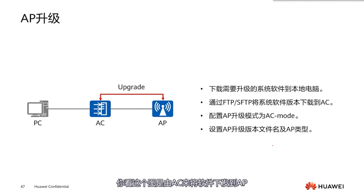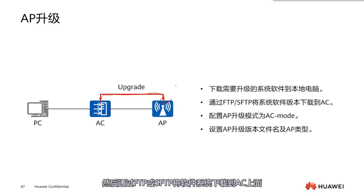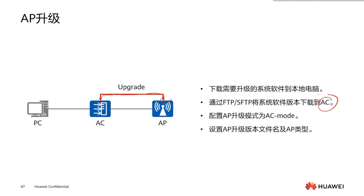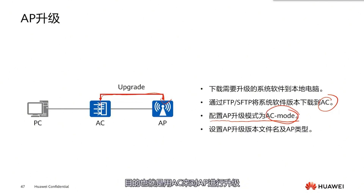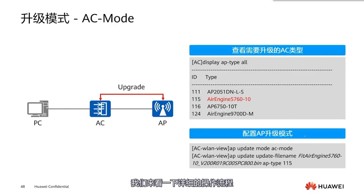Now let's look at the upgrade of the AP. The AP upgrade is controlled by the AC — the AC distributes software to the AP as shown in the diagram. Similarly, we first download the software to the computer, then transfer the system software onto the AC via FTP or SFTP. The next step requires setting the AP upgrade mode to AC mode, meaning we use the AC to upgrade the AP. Finally, we set the AC's upgrade version with the file name and AP type.